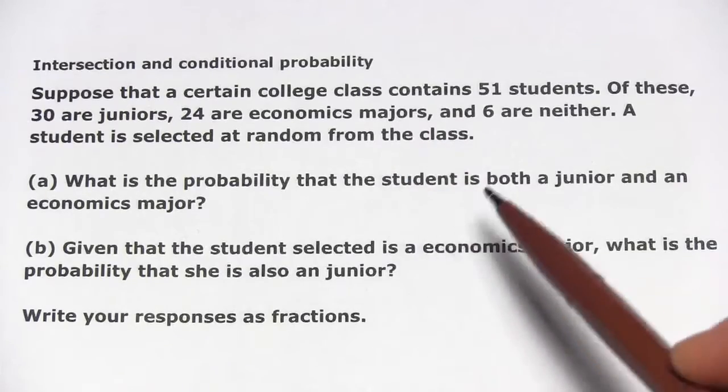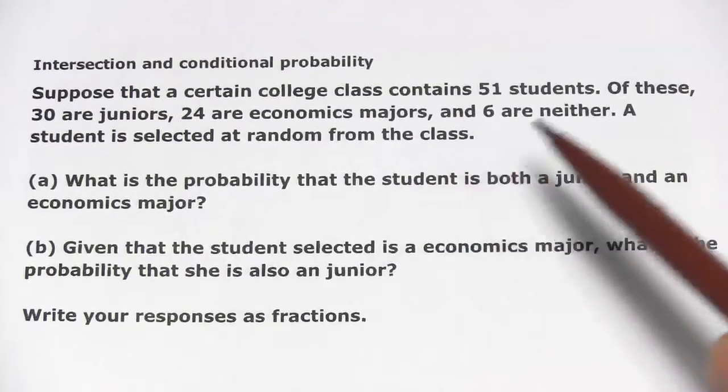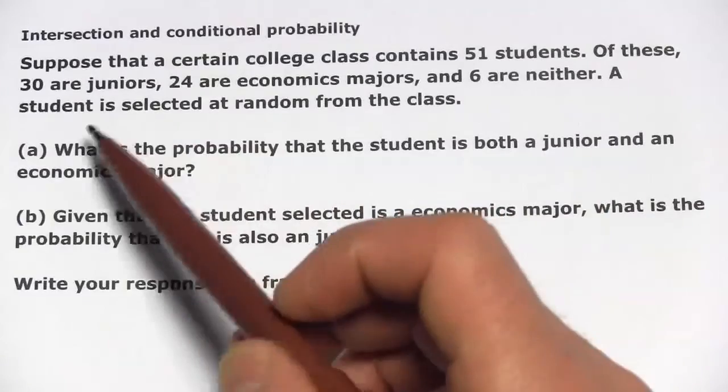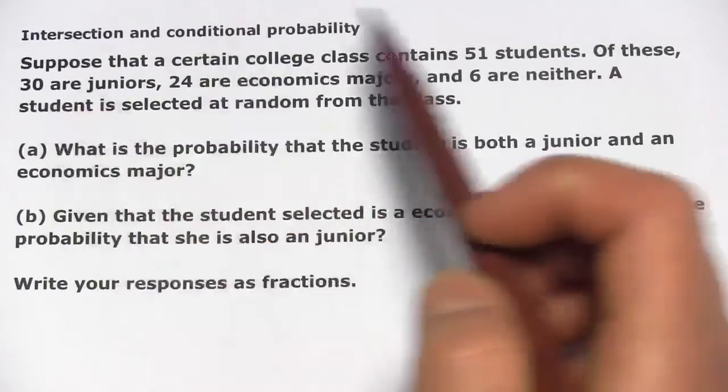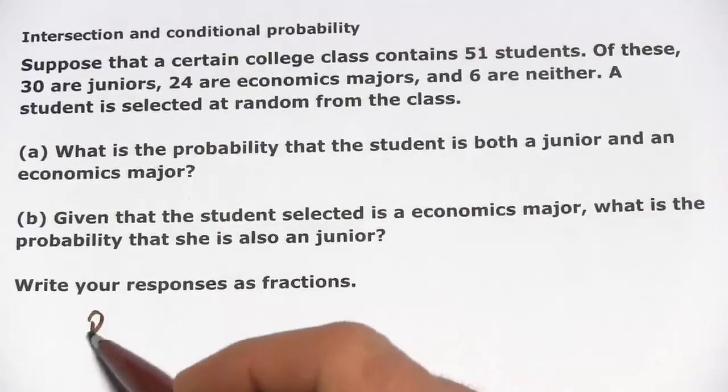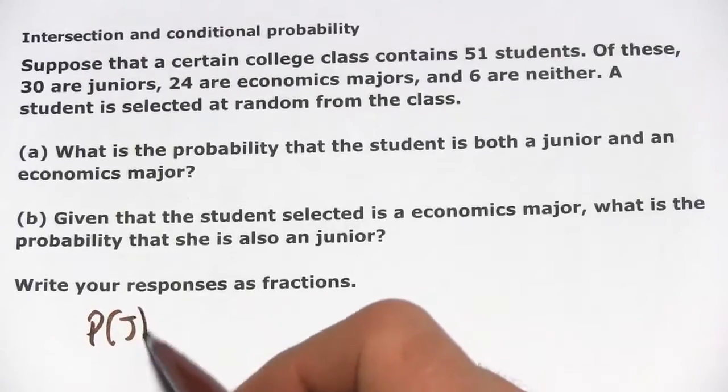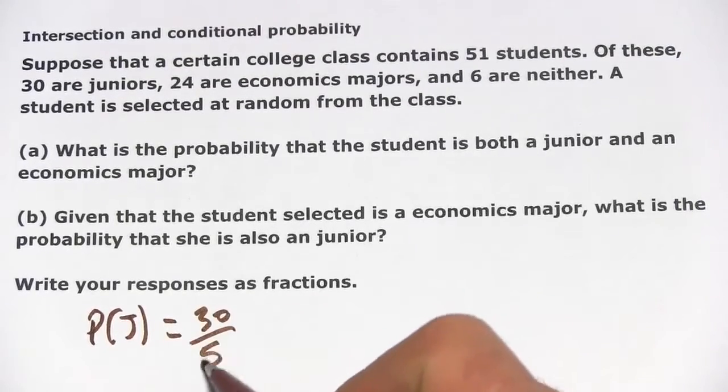So let's start by writing out the probabilities that we already have here. We have the probability of being a junior. There are 30 juniors out of 51 students. So I'm going to call that P of J, that equals 30 out of 51.